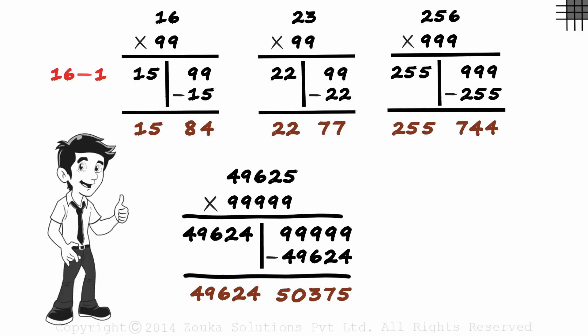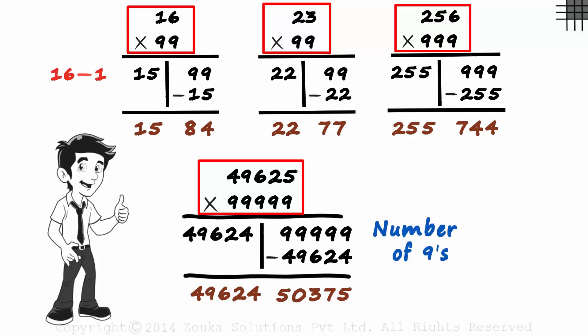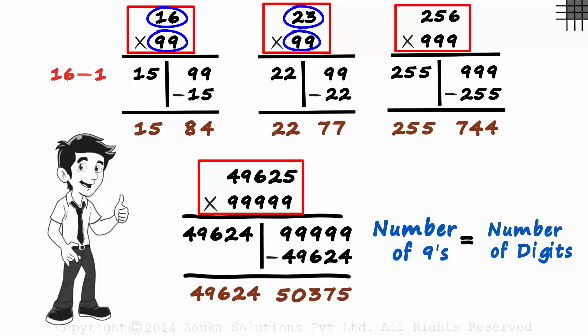But did you observe something? In all the cases, the number of nines is the same as the number of digits in the number. Two and two, two and two, three and three, five and five.